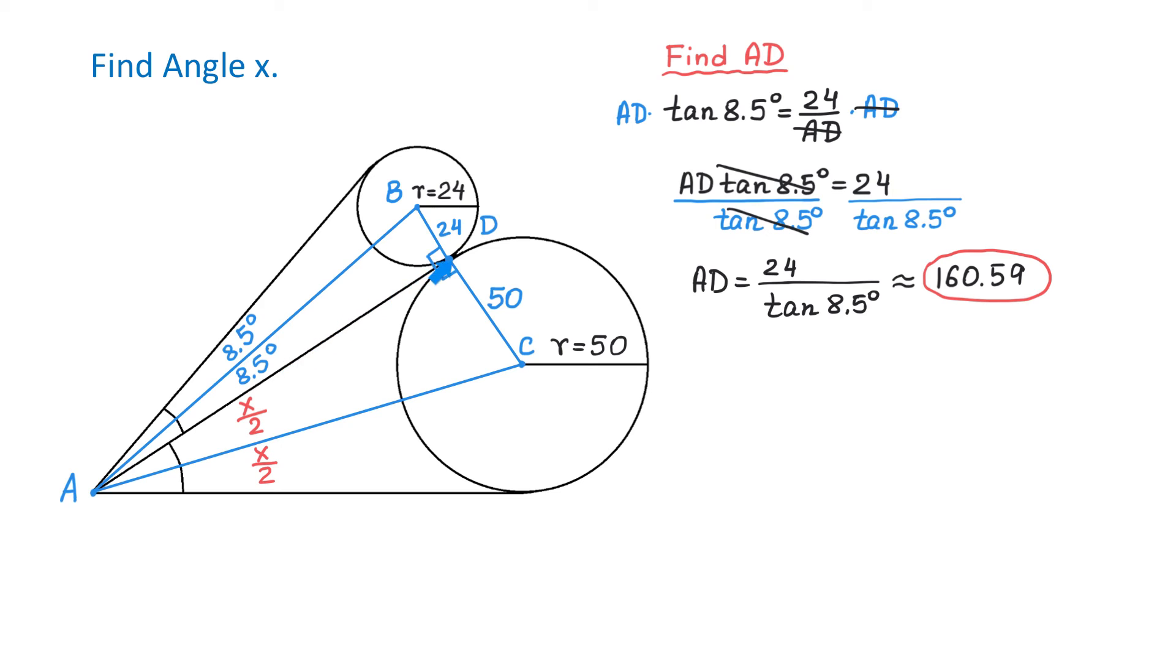The side AD is approximately 160.59 units and we can find the angle x over 2 using the tangent function. We will write that tangent of x over 2 equals the opposite side 50 divided by the adjacent side 160.59.